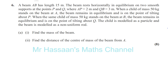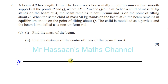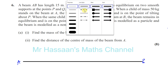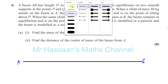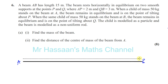Let's draw the beam as a straight line. There's your beam, AB. Its length is 15 meters. That's the total length of AB.